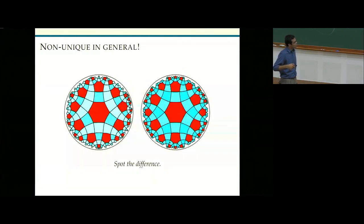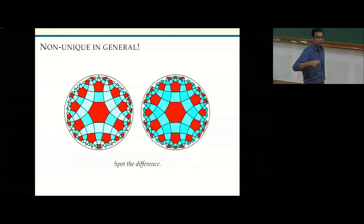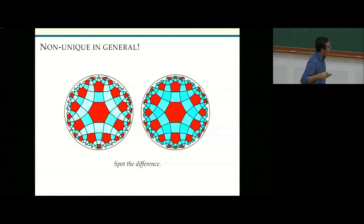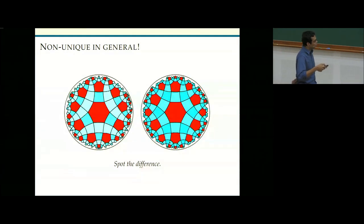The tiling is non-unique in general. Here are two uniform tilings with the same vertex type 4, 4, 6. They look tantalizingly close but are different: to get from one hexagon to another, in one case you cross three squares, in the other just one. The way to get from one to the other is by the shifting trick: there is a row of squares along a geodesic, and you can shift all tiles on one side along that geodesic.